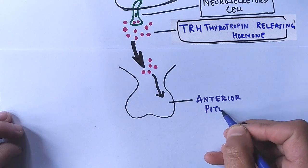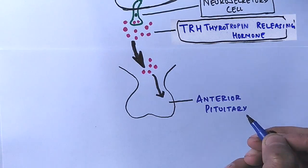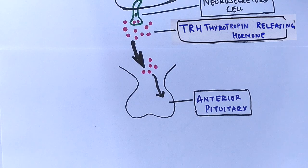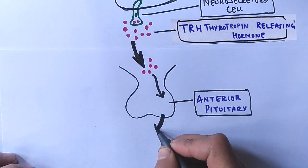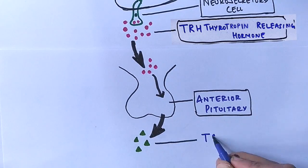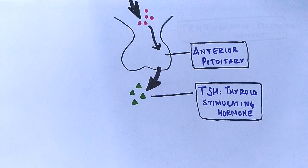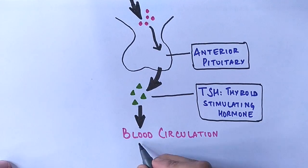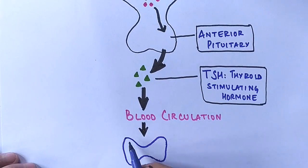Through this it stimulates the release of thyroid stimulating hormone, that's TSH. This TSH is made from cells called thyrotrophs present in the anterior pituitary gland. TSH then gets into the blood circulation and reaches the target site which is the thyroid gland.